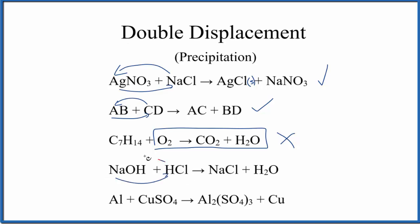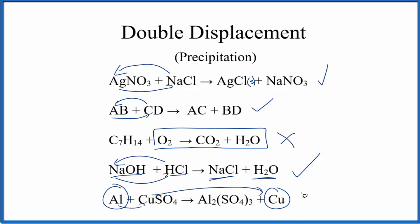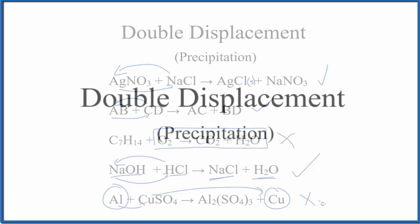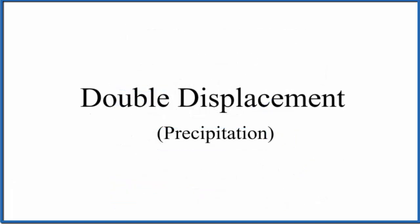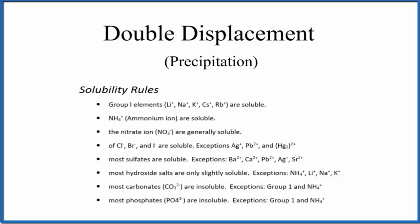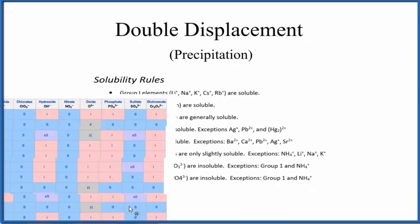In this reaction, the sodium and hydrogen switch places — we have Na and Cl together now, and then OH and H, which is just H2O. That's double displacement, and it's also called a neutralization reaction because we have a base and an acid making a salt and water. The last one, the aluminum pushed the copper out — that's a single displacement, not a double. To figure out whether we'll have a precipitate, we can use either the solubility rules or a solubility table, which tells us which product will be a solid and which will stay dissolved.